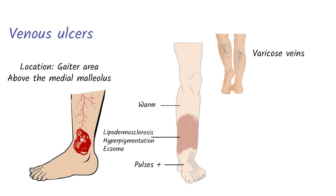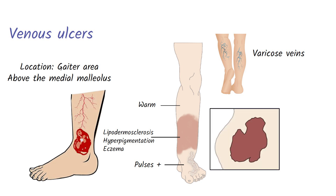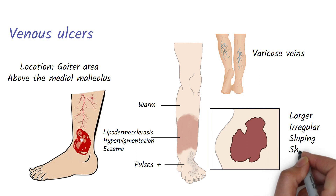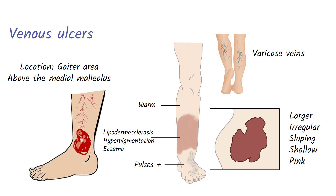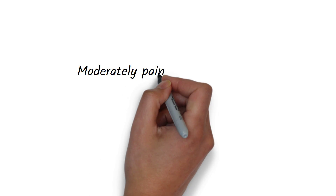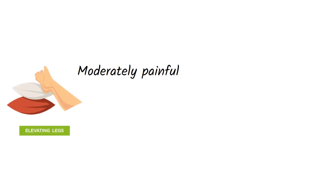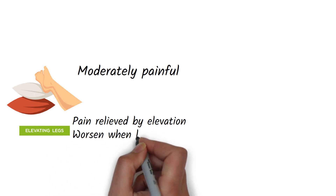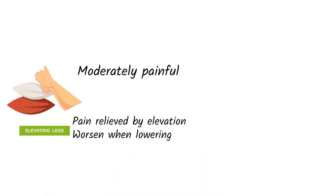Venous ulcers are much larger than arterial ulcers. They have irregular borders, sloping edges, and they are more superficial than arterial ulcers. The floor of venous ulcers will look pinkish in color due to granulation tissue, and the ulcer will be wet and more likely to bleed. Venous ulcers are mild to moderately painful. Pain is relieved by elevation of the leg and worsens when lowering the leg. Lymph nodes can be palpated if infected.